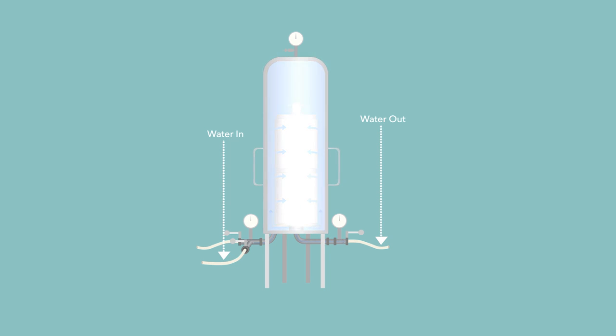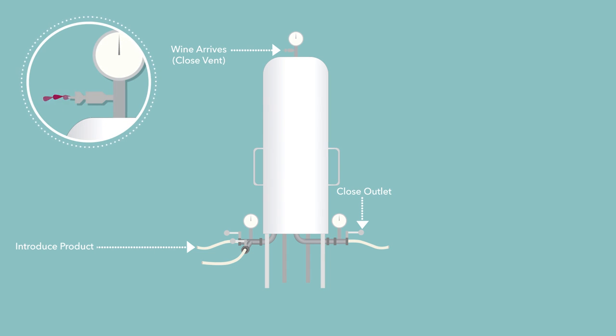Commencing filtration. Drain any residual rinse or sanitation water, then close drains and water discharge lines. Close product outlet valve, and with vent open, slowly introduce wine through product inlet valve. When wine arrives at vent, close vent and open product outlet valve.